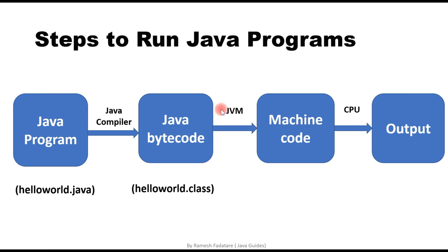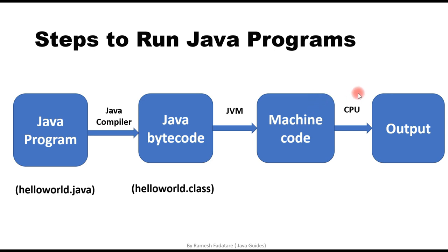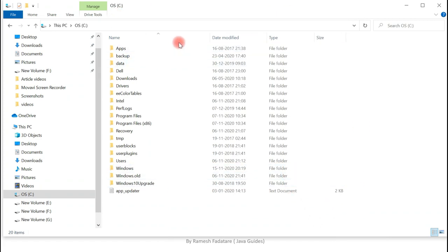Here are the steps to run any Java program. We create a file with a .java extension and write a Java program into it — we use JDK to develop Java programs. We then use a Java compiler to compile the Java program into Java bytecode. Once we have Java bytecode in a .class file, we need a JVM to translate that bytecode into machine-specific code. This machine-specific code is a set of instructions that are executed by the CPU, which produces the output.